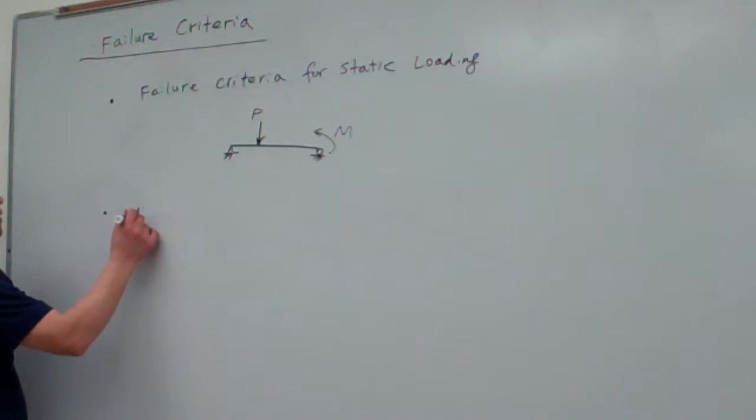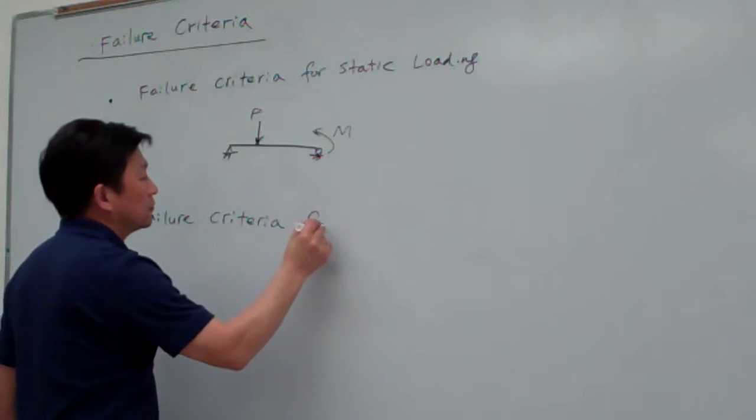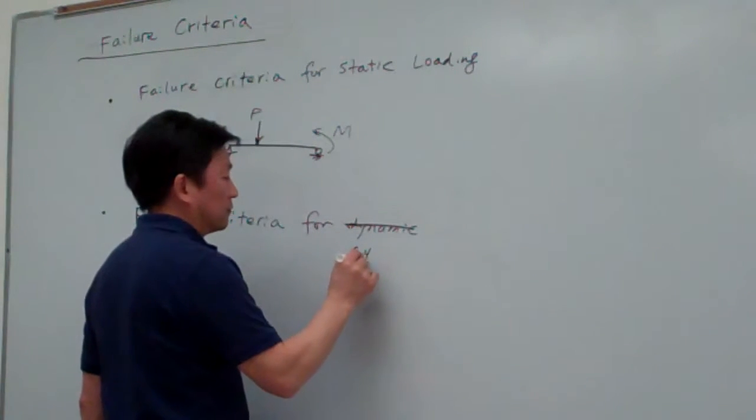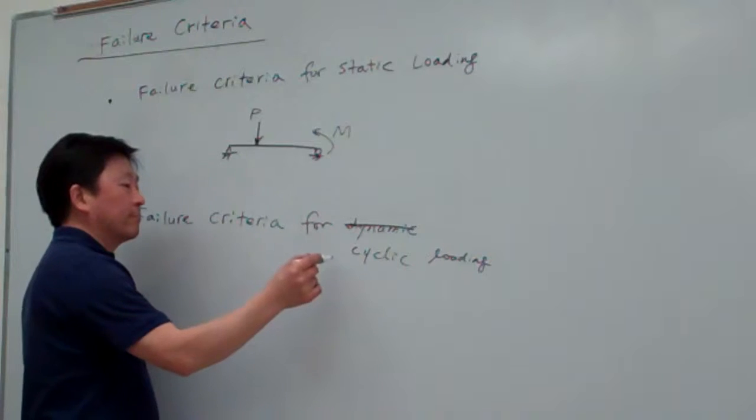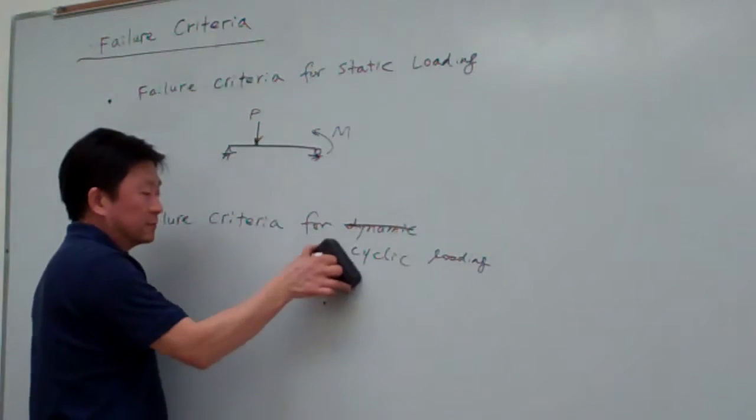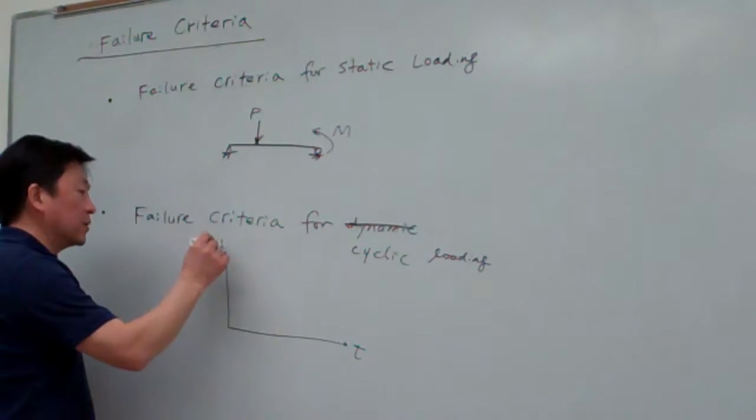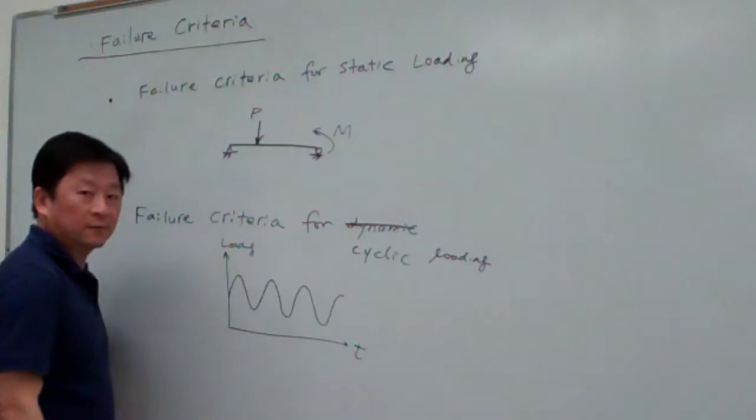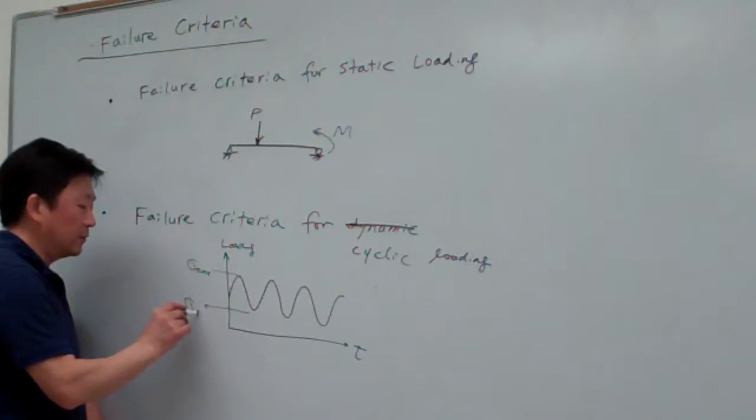And the second type is the failure criteria for dynamic, I would say cyclic loading. For the cyclic loading that can be like this, so if this is the time and this is the loading, we could have this case. This is the sinusoid loading, and here this is the sigma max, and here is sigma minimum.